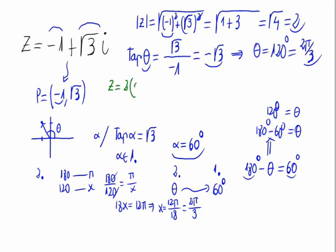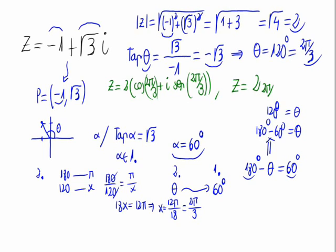Now let's express the complex number in its trigonometric form: z equals 2 times the cosine of 2π/3 plus i times the sine of 2π/3. And the polar form is written as the modulus sub the argument, so it would be 2 sub 2π/3. And with this, we are done.